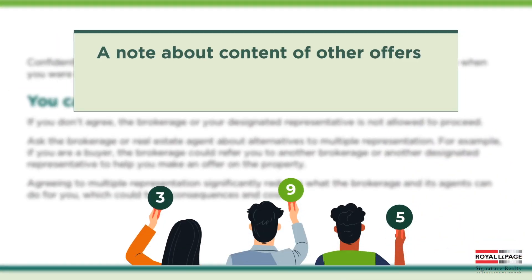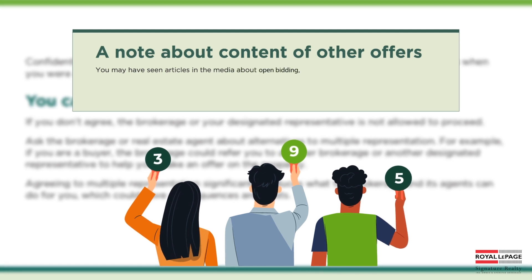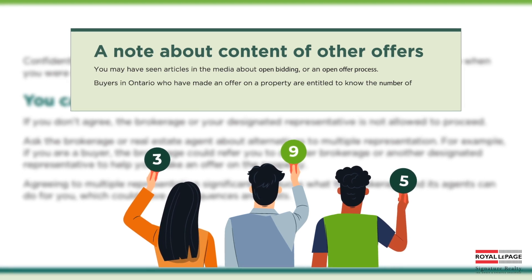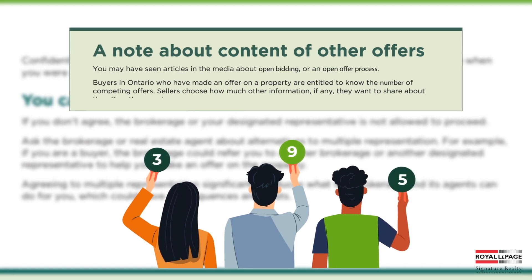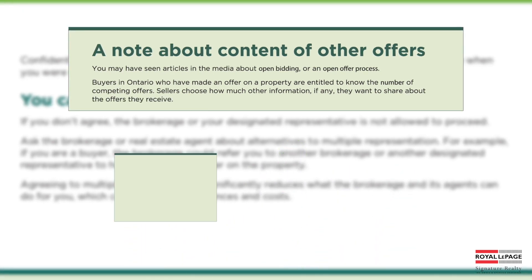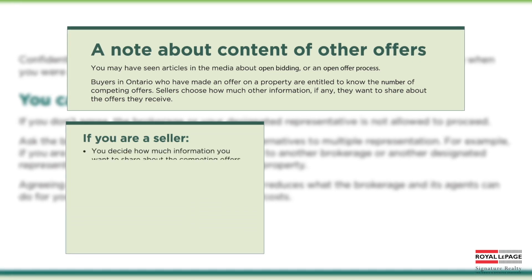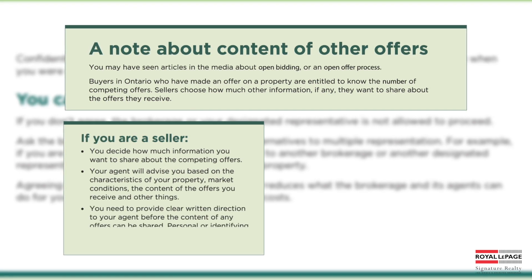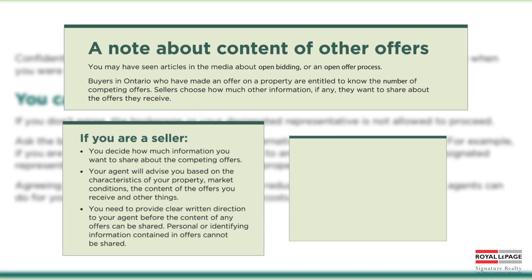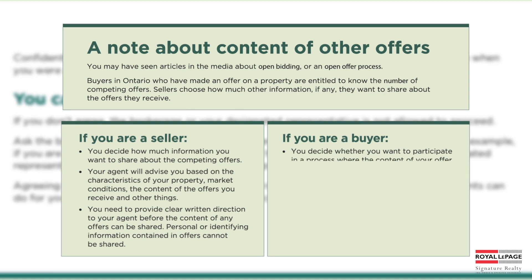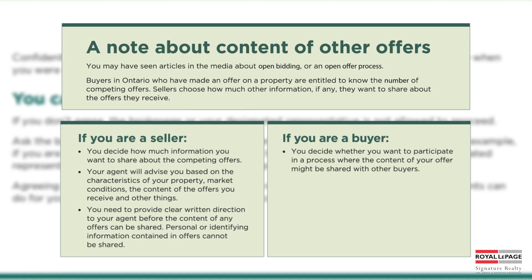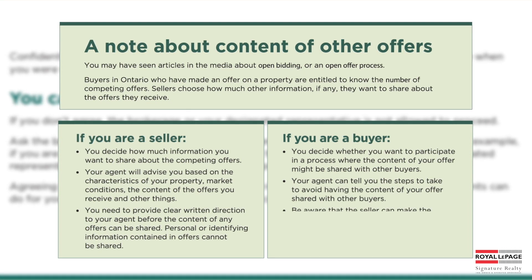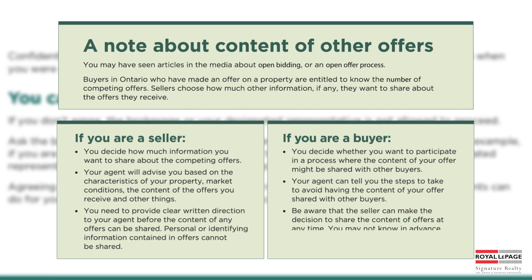A quick note on open offers. Recently, you may have seen articles in the media about open bidding or an open offer process. Buyers in Ontario who have made an offer on a property are entitled to know the number of competing offers. Sellers choose how much other information, if any, they want to share about the offers they receive. If you are a seller, you decide how much information you want to share about the competing offers, and you need to provide clear written direction to your agent before the content of any offers can be shared. If you are a buyer, you decide whether you want to participate in a process where the content of your offer might be shared with other buyers. You must be aware that the seller can make the decision to share the content of offers at any time, and you may not know in advance.